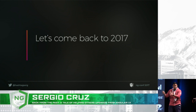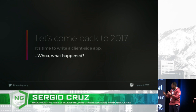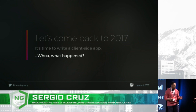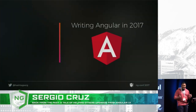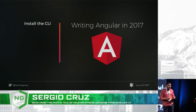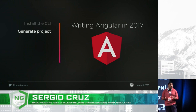Let's come back to the present. We're back in 2017, and it's time to write our first client-side app. What does it look like when we're writing Angular today? Well, we start by installing the CLI. Once we've done that, we use it to generate a project.